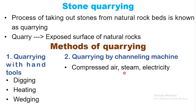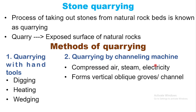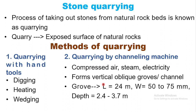Other energy sources used include compressed air and steam, and electricity. Regarding vertical grooves and channels: the length is 24 meters, width is 52 to 75 meters, and depth is 2.4 to 3.7 meters. The third method is blasting.